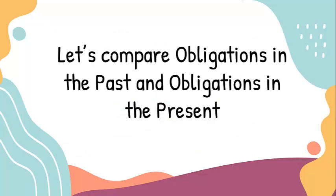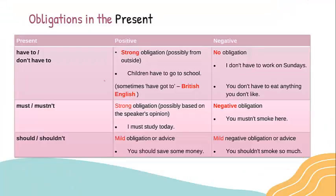Let's compare obligations in the past and obligations in the present. Obligations in the present: the positive form of 'have to' expresses a strong obligation, possibly from outside. For example, 'children have to go to school' — it expresses strong obligation because they have no option.